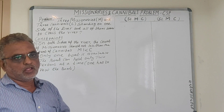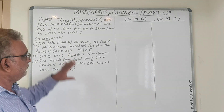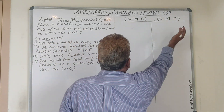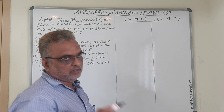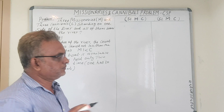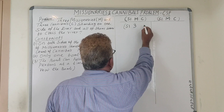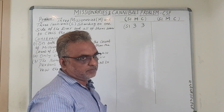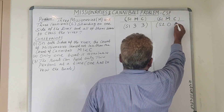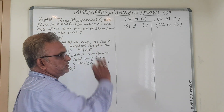Now let us see how to solve this problem using constraint satisfaction without violating the given constraints. Consider this as side 1 and side 2. Here M represents the number of missionaries and C represents the number of cannibals. Initially, on side 1 we have three missionaries and three cannibals, and on side 2 we have zero missionaries and zero cannibals. This is the initial state.